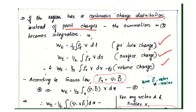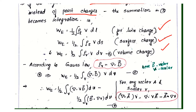For the volume charge case, WE equals one-half times the integral of rho-V into V dv. We apply Gauss's law: rho-V equals del-dot-D, and substitute del-dot-D into the expression.